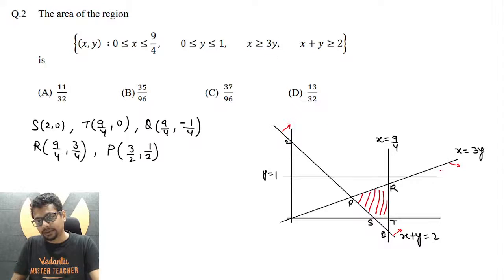Here x is supposed to be greater than or equal to three y, so this region is what we are looking for. The intersection of all the regions gives us this region, and this is the region whose area we want to find.